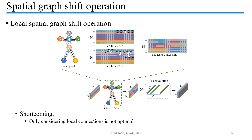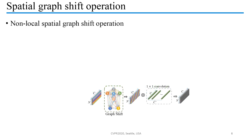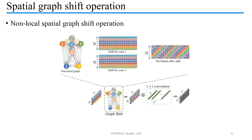However, recent research shows that only considering local connections is not optimal for skeleton action recognition. Therefore, we make the receptive field of every node cover the full skeleton graph and propose a non-local spatial graph shift operation. The shifted feature looks like a spiral, which makes every node obtain information from all other nodes.